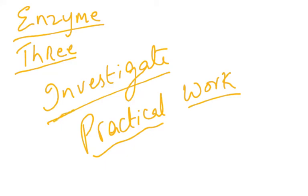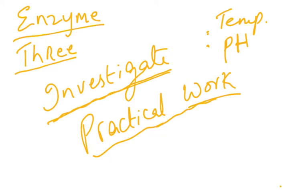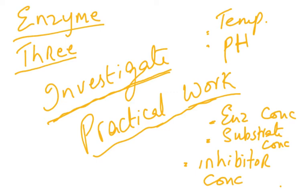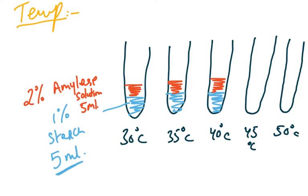This third video on the chapter on enzymes covers the practical procedures we need to investigate. The first is the effect of temperature on the rate of enzyme action, the second is the effect of changing pH, the third is enzyme concentration, the fourth is substrate concentration, and the fifth is inhibitor concentration. We need to understand how each affects the rate of enzyme action.